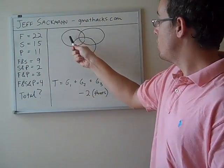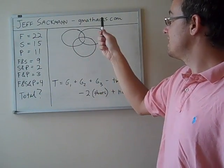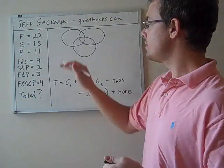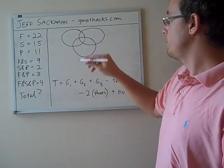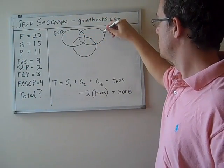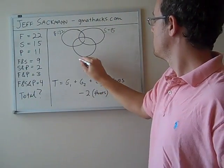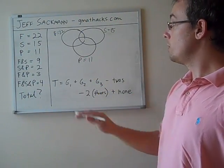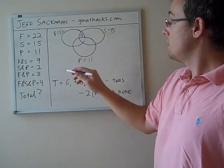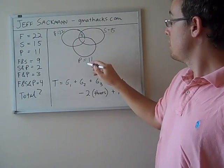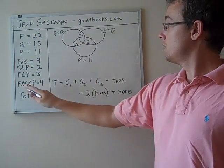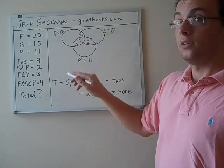So we have 1, 2, 3, 4, 5, 6, 7 different sections of the Venn diagram to contend with. So let's map all this information onto the diagram. Let's call this upper left one France, which is 22, Spain is 15, Portugal is 11. We know France and Spain is 9, so France and Spain, the overlap is here. Spain and Portugal, that's 2. France and Portugal is 3, and the super overlap, all three in the middle, is 4.